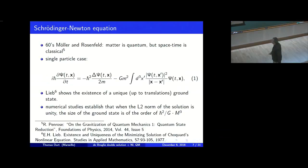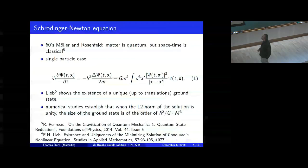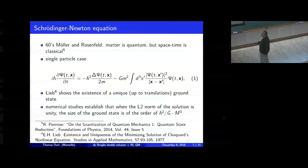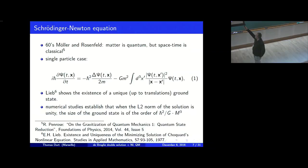The Schrödinger-Newton equation is what is called a semi-classical equation — it belongs to the program of semi-classical gravity. You can find the pioneer ideas in the 1960s, according to Møller and Rosenfeld: it was not necessary to quantize space-time. Space-time was supposed to be classical; it's only matter that is quantum in this view. If you develop this idea, you can derive in the non-relativistic limit this equation — the Newton-Schrödinger equation — where the particle undergoes a self-gravitational interaction.